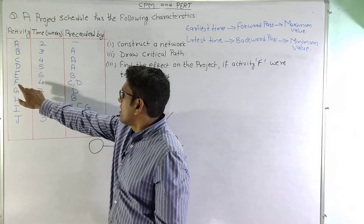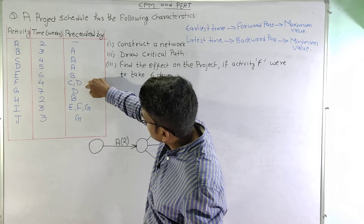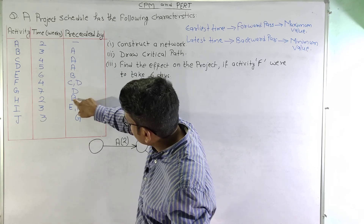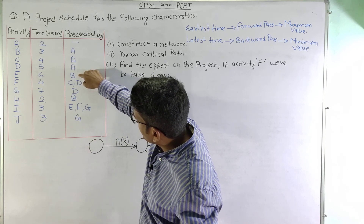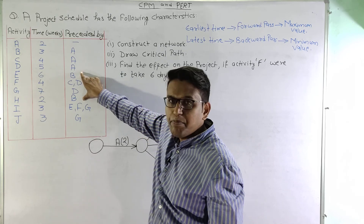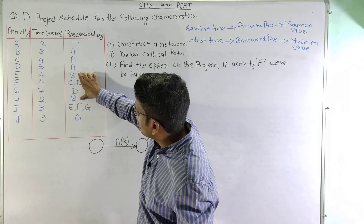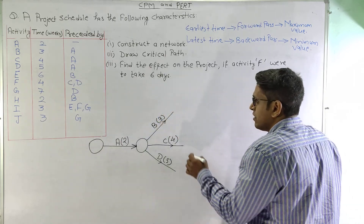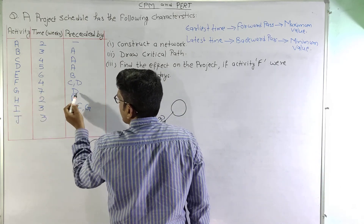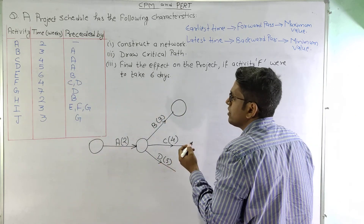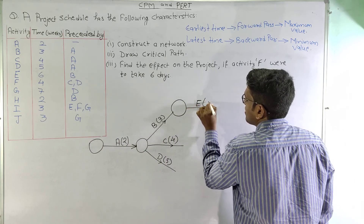Moving on to activity E, activity E is preceded by activity B. As we look further, we can see that there is another activity also preceded by B only. Since two activities are preceded by B only and B is not in combination with any other activity, we can directly end activity B and start activities E and H from that node. Activity E takes 6 weeks.